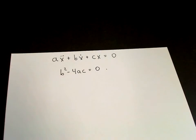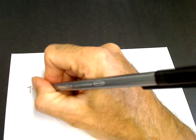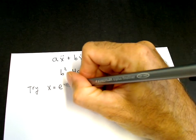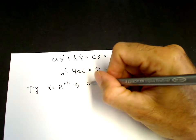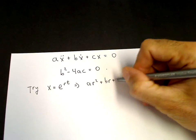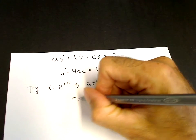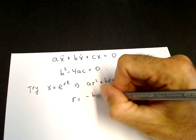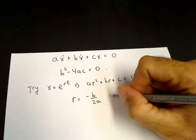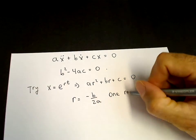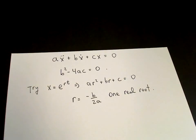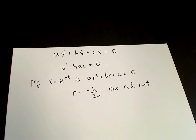We're going to solve the second-order linear homogeneous ODE with constant coefficients when b squared minus 4ac equals 0, so we have a repeated root. Remember we try x equals e to the rt, and we get ar squared plus br plus c equals 0. In this case, since b squared minus 4ac equals 0, we only have one root, which is r equals minus b over 2a — one real repeated root.